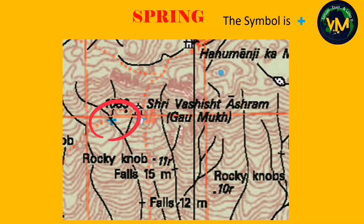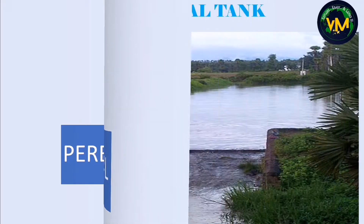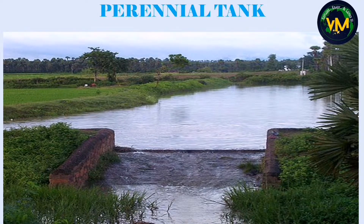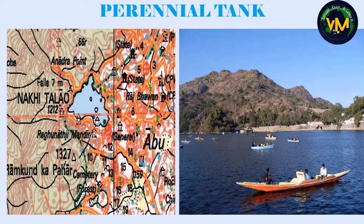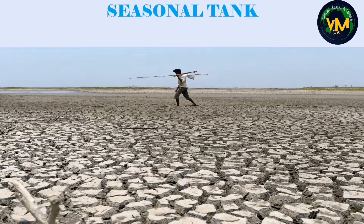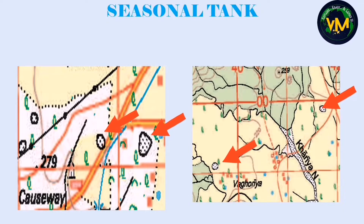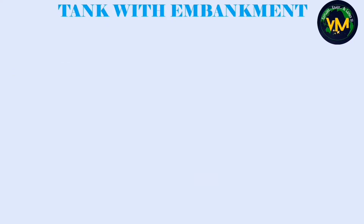Next we move on to tank irrigation. Tanks are also called thalos. There are two types: perennial tanks and seasonal tanks. Perennial tanks have water throughout the year and so they are represented in blue color. This is a picture of the famous Nakithalo, a perennial tank in Mount Abu, represented in our topo map.